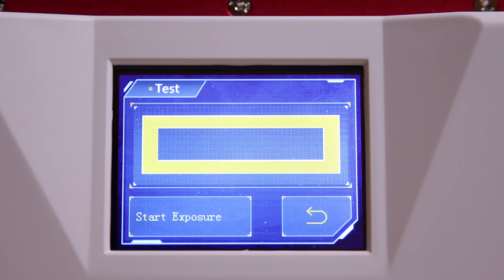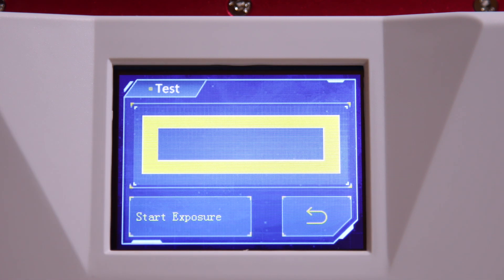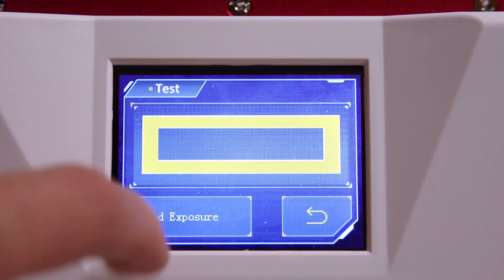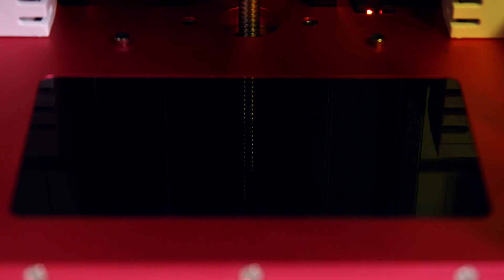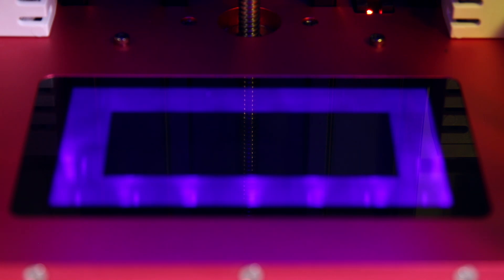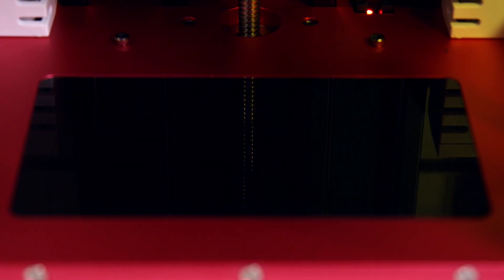The Photon S uses a vat of liquid plastic known as resin. This is cured through the use of an LCD monitor and a series of UV LEDs. When exposed to a specific wavelength of UV light the resin cures. By using an LCD monitor it's possible to mask a UV LED to produce basic shapes. Stack enough of these shapes together and you end up with a 3D printed part.